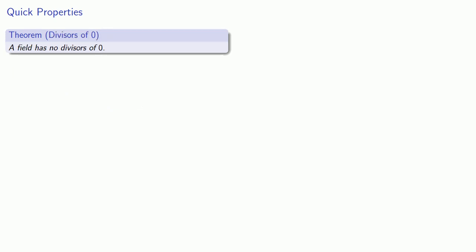Another useful property of fields is that they have no divisors of 0. So suppose we have a product equal to 0 where one of them is not equal to 0. Well then, once again, since A inverse has to exist, since A is not equal to 0, then I can left multiply by A inverse.